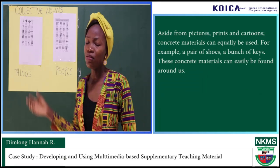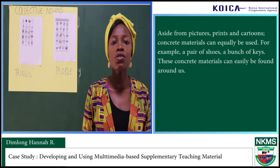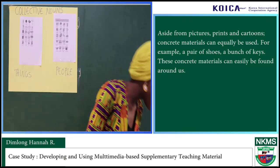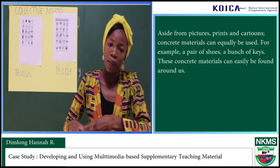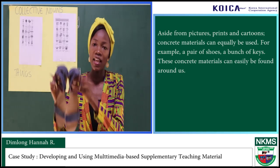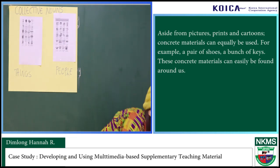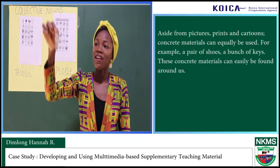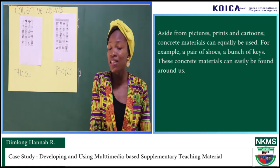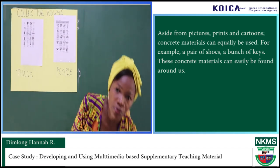Aside from pictures, prints, and cartoons, I mentioned earlier that we can equally use concrete materials found around us. For example, a pair of shoes is an example of a collective noun. Another example is a bunch of keys. These are things we can find — things that are at our disposal and easily found around us.